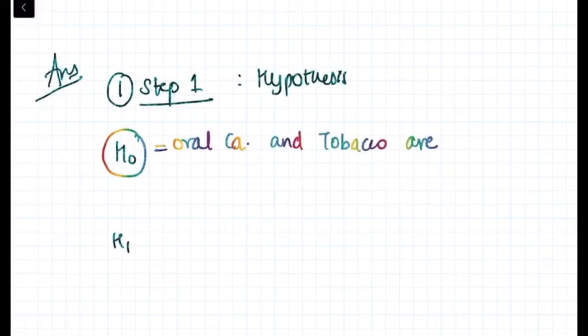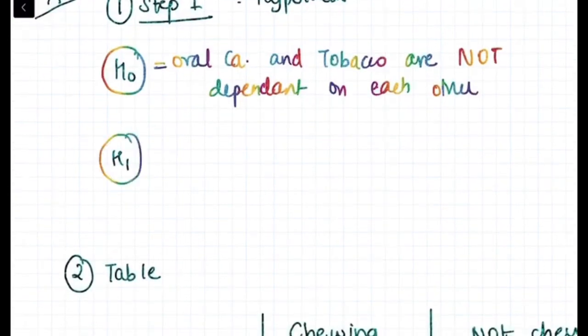First is hypothesis formulation. H0 is null hypothesis: oral cancer and tobacco are not dependent on each other is the null hypothesis. Alternate hypothesis: that they are dependent on each other.